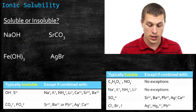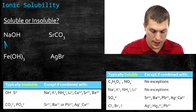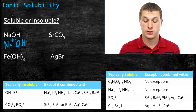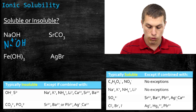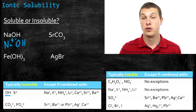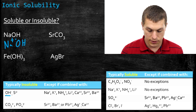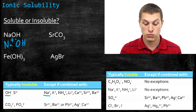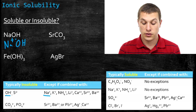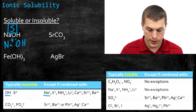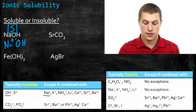The first compound we'll look at is sodium hydroxide, which splits into Na⁺ and OH⁻. Looking through our solubility tables, hydroxides are typically insoluble — they appear at the top of the insolubility list. But checking the exception ions, we see right away that sodium is an exception. So hydroxides are typically insoluble except when paired with sodium, potassium, or ammonium — and ours is paired with sodium. That means sodium hydroxide is soluble.